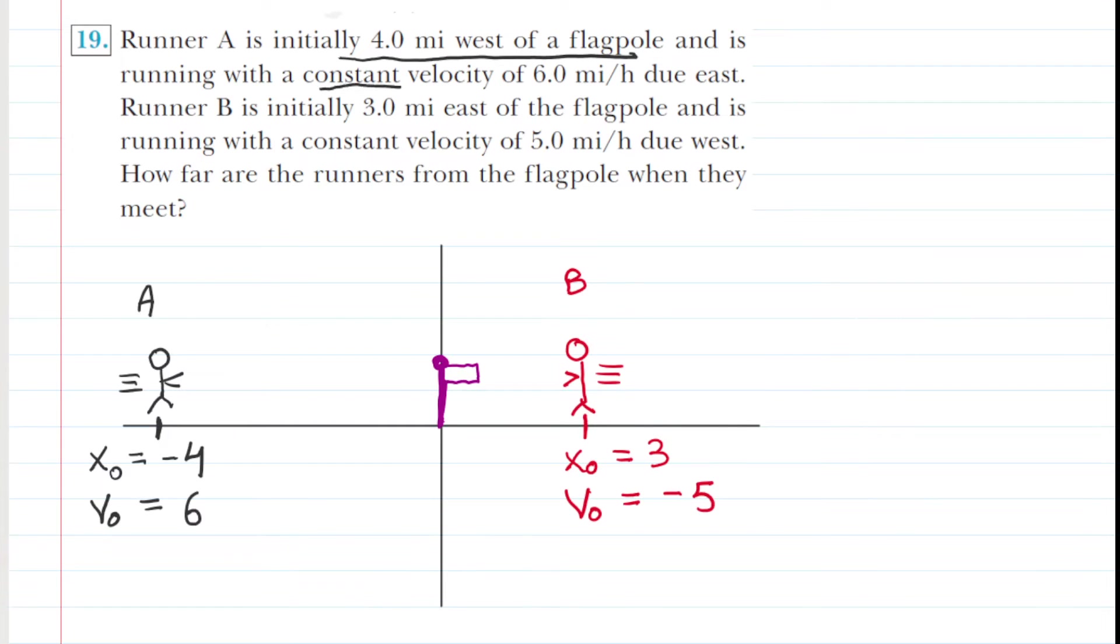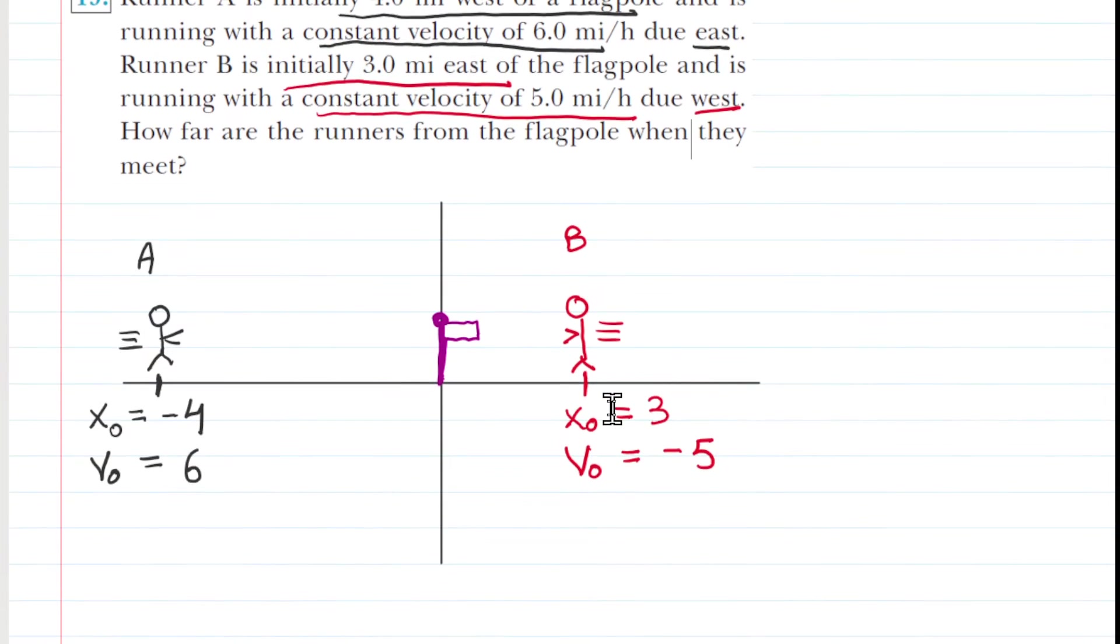In addition, that person is moving with a constant velocity of six miles per hour due east. Because the velocity is due east, that runner is traveling to the right and we arbitrarily assign a positive direction to the rightward direction. So their initial velocity is positive six meters per second. Now look at person B. She is located initially three meters east of the flagpole. If you go to the right of the flagpole or east, that's a positive x coordinate, so her initial x coordinate is positive three. She is running with a constant velocity of five miles per hour due west. West would be to the left and therefore her velocity is negative. Be very careful about those signs for positions and velocities.